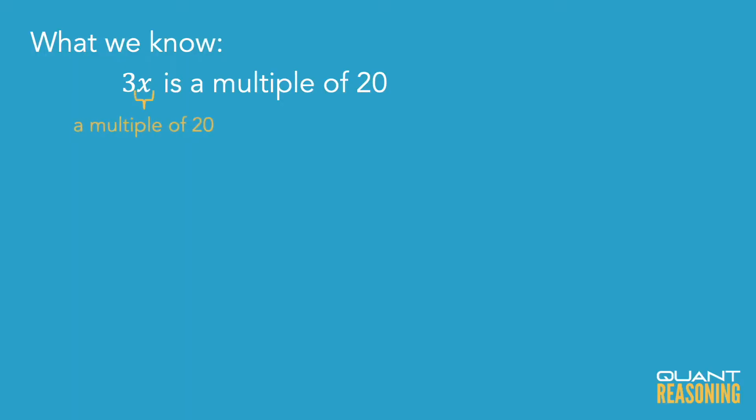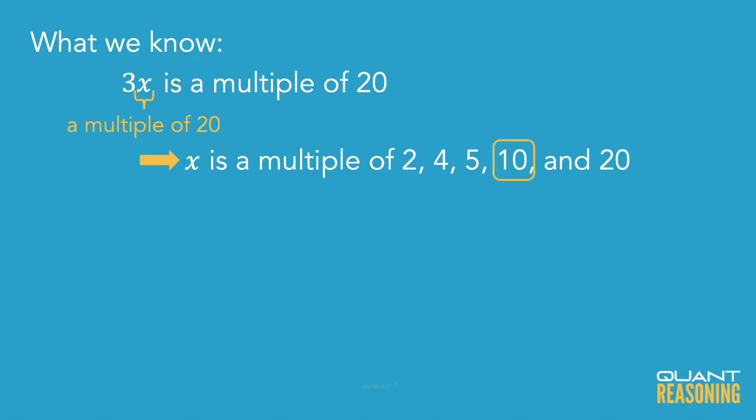Now 20 isn't in the answer choices, but if you're a multiple of 20, then you must also be a multiple of all of the factors of 20. So we can say that x must be a multiple of 2, 4, 5, 10, and 20. Of all of those in the answer choices, I'm seeing 10. So I'm going to pick it and move on to the next question.